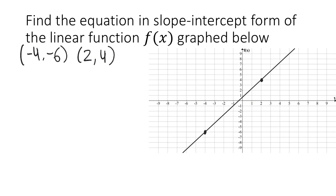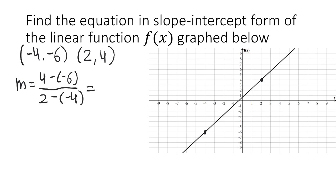First, we can use the slope formula to find the slope of our line: y2 minus y1 over x2 minus x1. So 4 minus negative 6 is 4 plus 6, which is 10. And 2 minus negative 4 is 2 plus 4, which is 6. That simplifies to 5 over 3. So the slope of this line is positive 5 over 3.